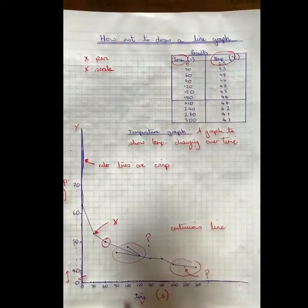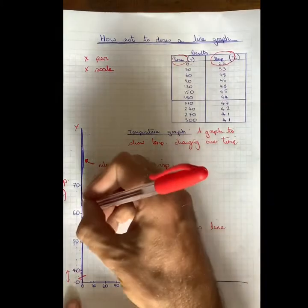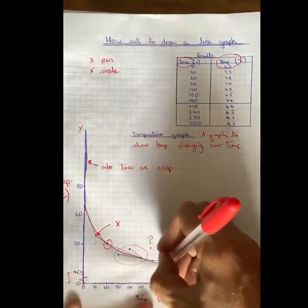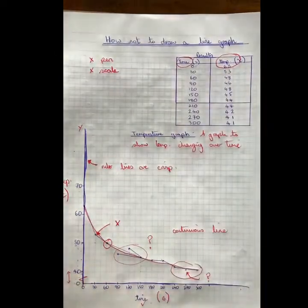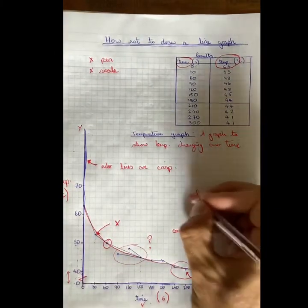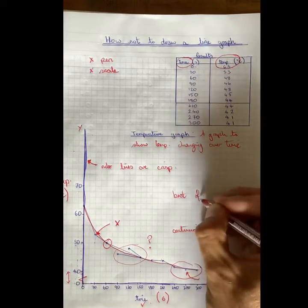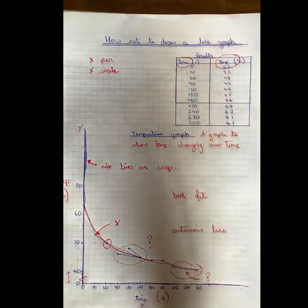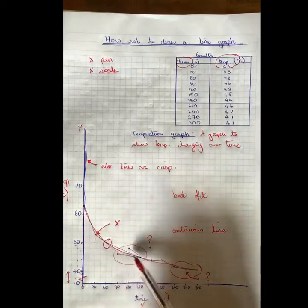Now, in this graph, to me, it actually looks like it's a line of best fit. Like so, a curved line of best fit. So if you're brave, you could try to put in a line of best fit. If not, just join with a ruler.